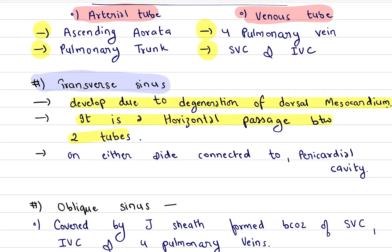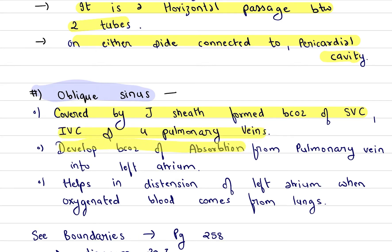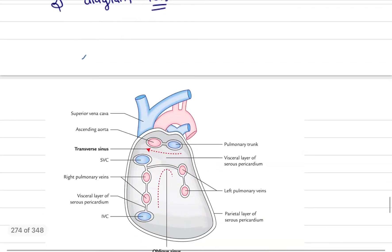The oblique sinus is formed by the four pulmonary veins. It develops due to degeneration of the dorsal mesocardium and absorption of the pulmonary vein into the left atrium. It helps in distension of the left atrium when oxygenated blood comes from the lungs.